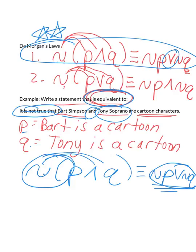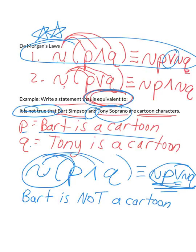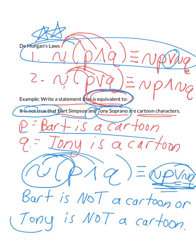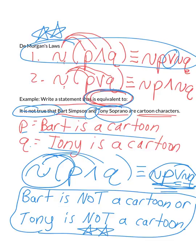Last step, let's rewrite this in words. Not P would be that Bart Simpson is not a cartoon character. So Bart is not a cartoon. Down arrow for the word or. Not Q would be that Tony Soprano is not a cartoon. And I'll just write, or Tony is not a cartoon. I'll just use their first names just to give myself a little bit more room. So this at the bottom that I'm circling is the final, final answer. So what are we saying? We're saying that the original sentence, which was, it is not true that Bart Simpson and Tony Soprano are cartoon characters, holds the same exact meaning as our answer, which is Bart is not a cartoon character, or Tony Soprano is not a cartoon character.